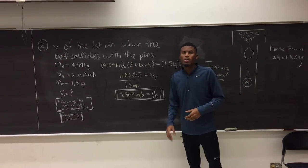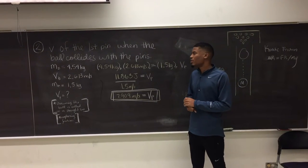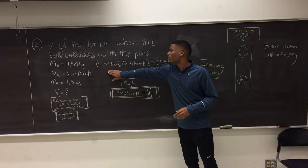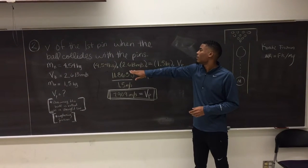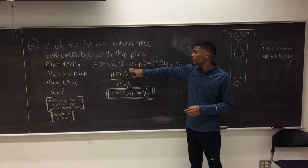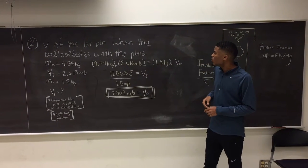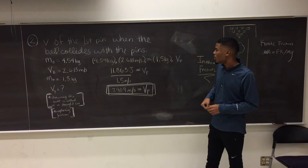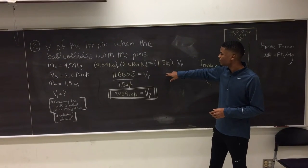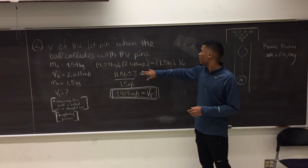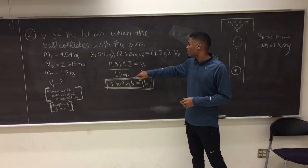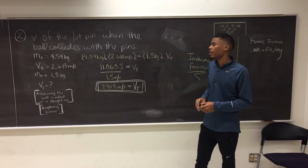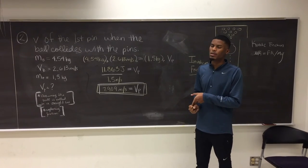So using the equation that we showed you earlier, M1 times V1 equals M2 times V2, we're going to figure out the velocity of the first pin hitting. We're going to plug in our mass of the bowling ball, which is 4.54 kilograms, and the velocity for that bowling ball, average velocity, which was 2.613 meters per second squared. Which is going to be equal to the mass of the bowling pin and the velocity of the bowling pin, which we don't know. Our mass of the bowling pin is going to be roughly 1.5 kilograms. So if we divide each side by 1.5 and do the math, we're going to get that the velocity of the first bowling pin hit is going to be 7.909 meters per second squared, roughly. Assuming that the ball was rolling in a straight line and also neglecting friction in this equation.